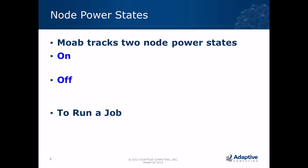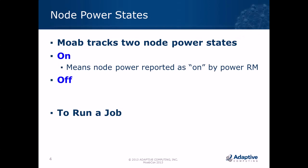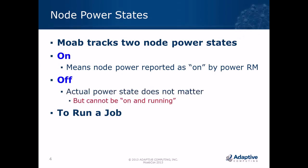Moab tracks two node power states: simply called on and off. On means the node power state has been reported as on by a power resource manager. Off does not actually have to mean off — to Moab, off means this node cannot be used for workload. Off can mean off if you want to completely remove the power, but you have some flexibility in what off actually means.